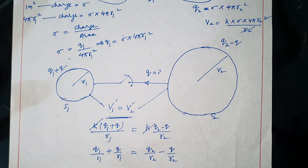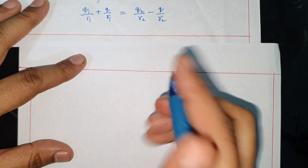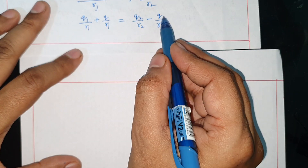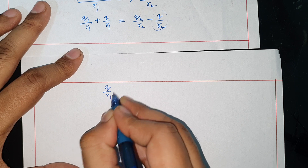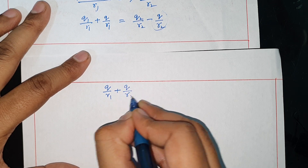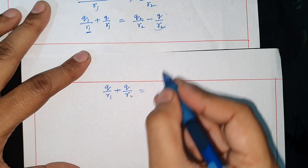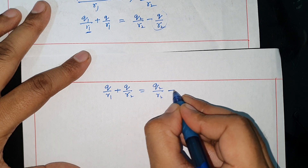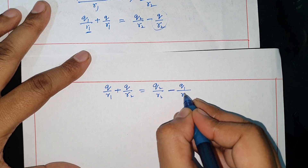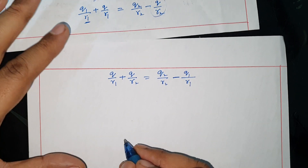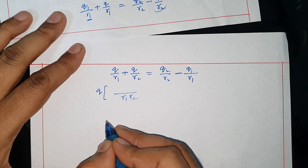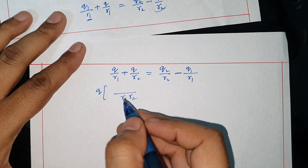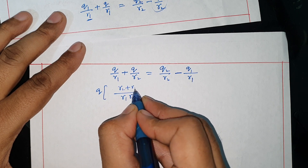After connecting the wire, the potentials become equal. We can write: Q over R1 plus Q over R2, and Q2 upon R2 minus Q1 upon R1. Taking Q common with LCM of R1 and R2, we get R2 plus R1.